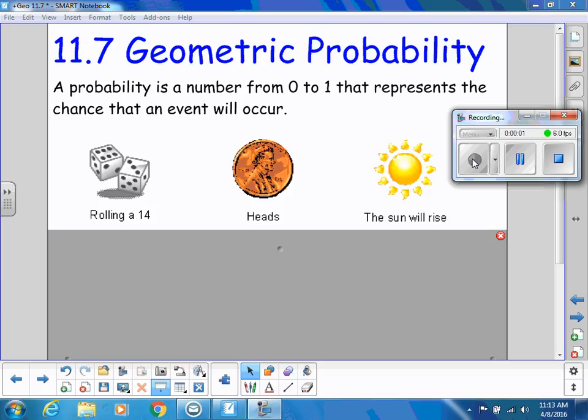Our last lesson in this unit is geometric probability. Just a reminder: probability is a number from 0 to 1 that represents the chance that an event will occur.